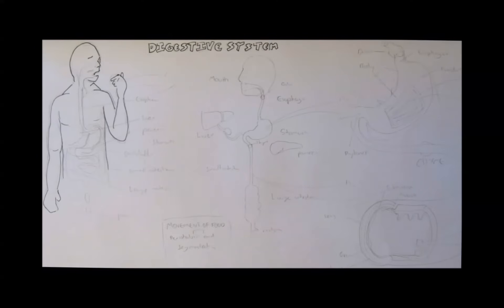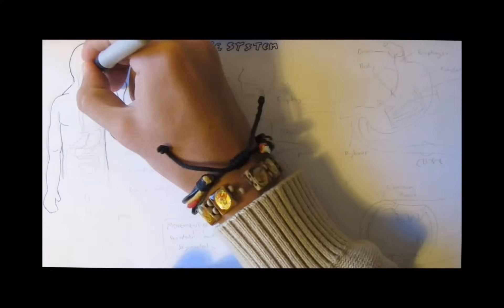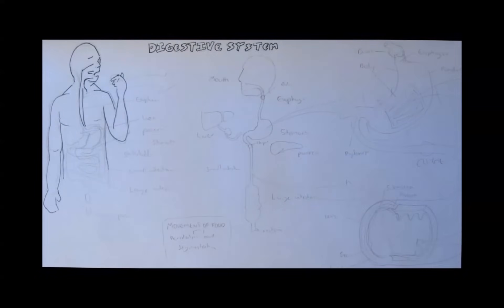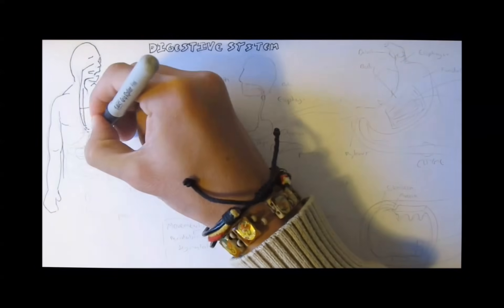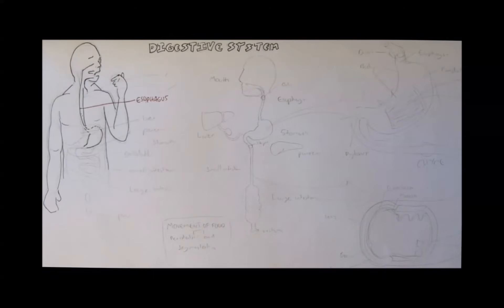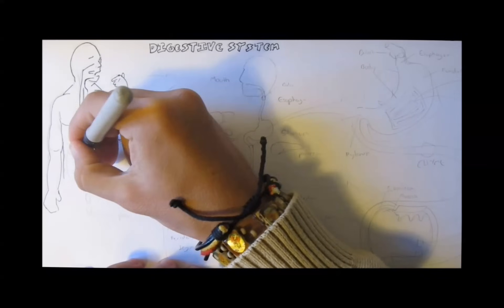Now food goes down this passage in your body called the gastrointestinal tract, and it begins in the mouth and travels down the esophagus to the stomach which is somewhere here. And then after the stomach it will go into the intestines.